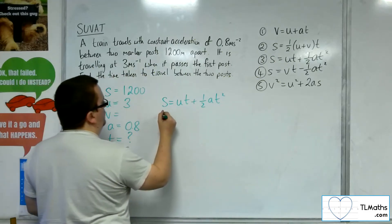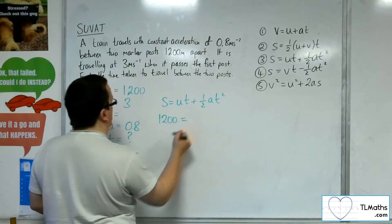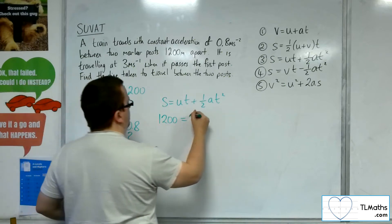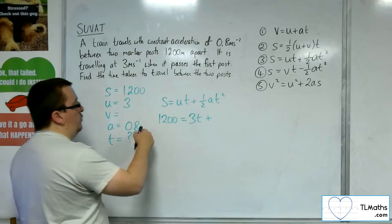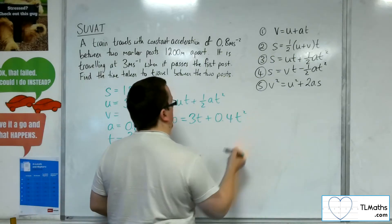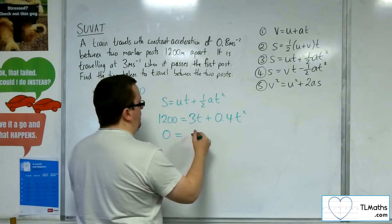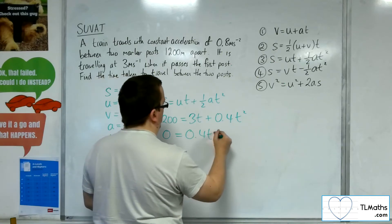So S is 1,200, U is 3, and A is 0.8. So 1 half of 0.8 is 0.4. I want to make sure everything's on one side of the equation for this.